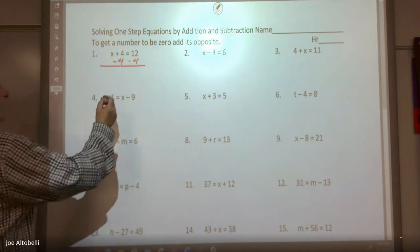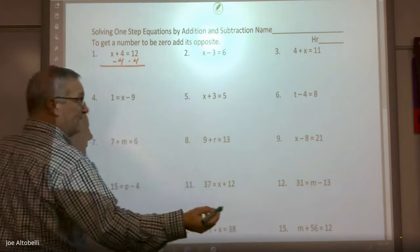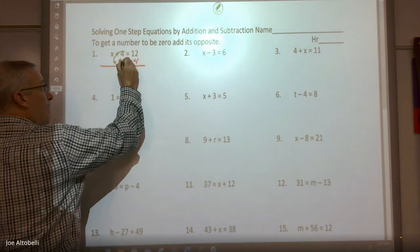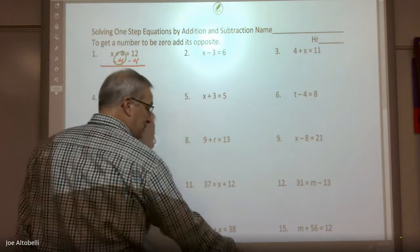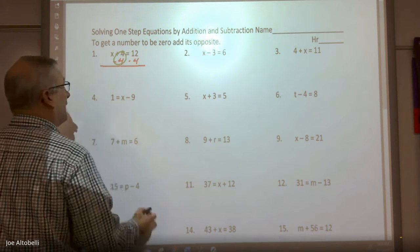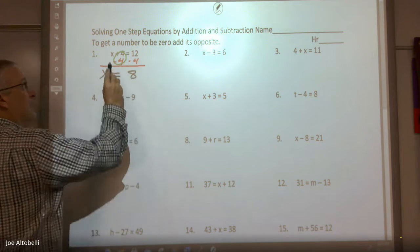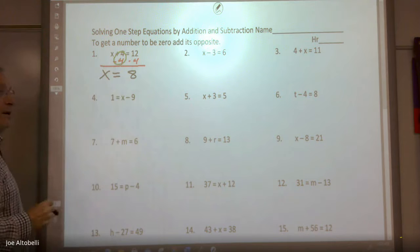We're going to subtract 4. Obviously you can't do this in another color, but this is going to zero out. That's the whole purpose. When I'm solving for a variable, I'm isolating that variable. I'm getting it all by itself. So in this case, to get it by itself, I'm going to add a negative 4, and then I get x = 8. 8 + 4 is 12.